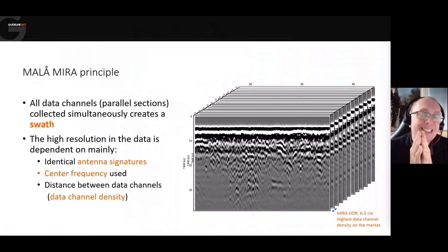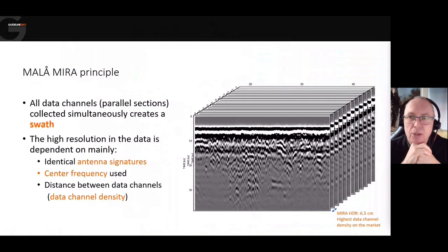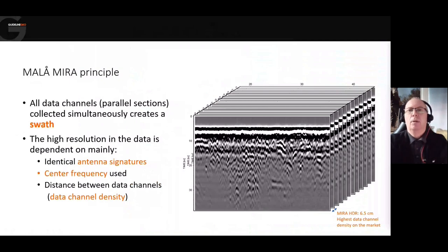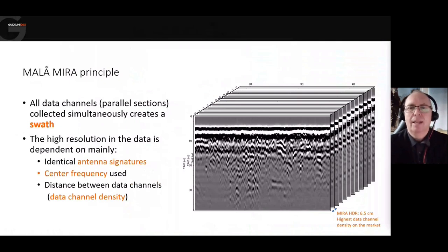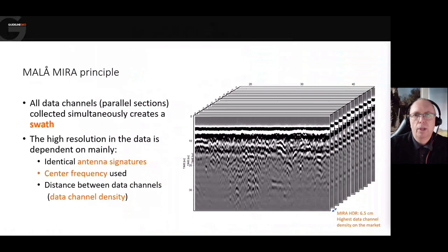There's one other thing to take into consideration when collecting the data: positioning. We need high accuracy positioning, which will typically come from either an RTK GNSS GPS or total station. We need to be getting down to centimetre accuracy with the positioning for good quality, effective data.